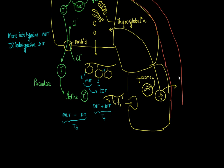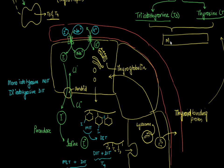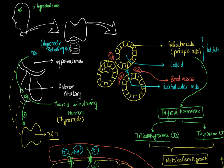A portion of T3 and T4 are released into the blood. They bind to a transporter protein called thyroid binding protein and are carried to target tissues where they carry out their function. T3 is more active compared to T4, so when they reach the target tissue, T4 is usually converted to T3. Their main roles are in metabolism and growth.